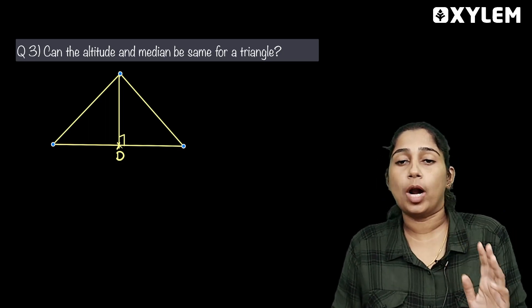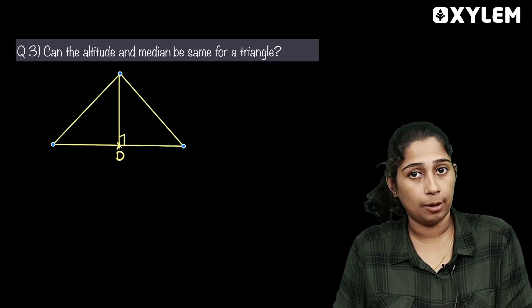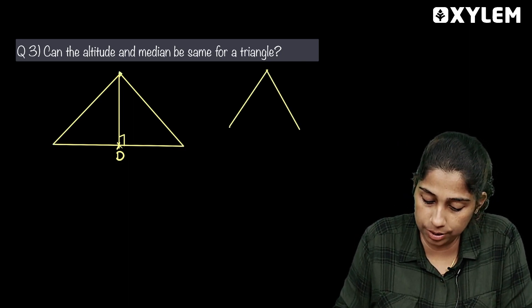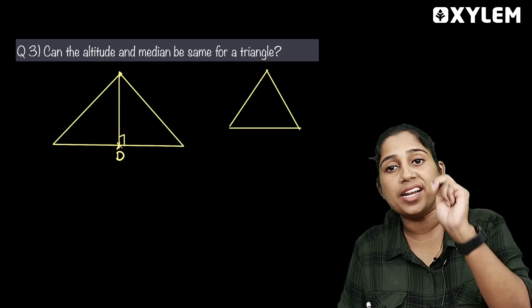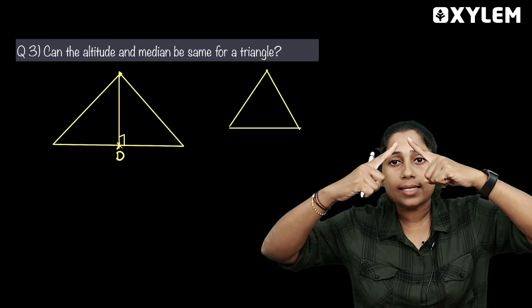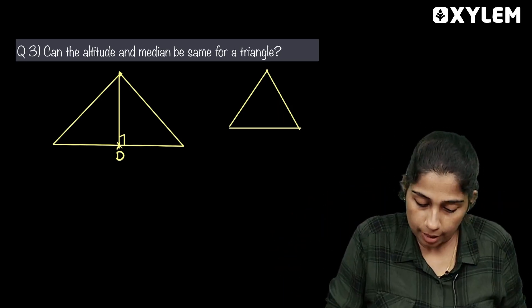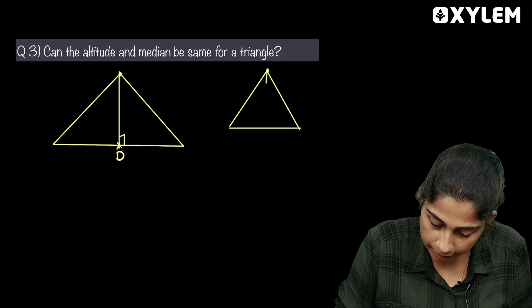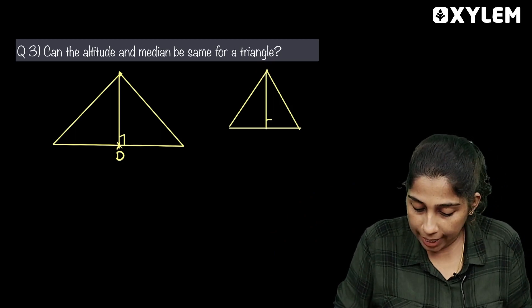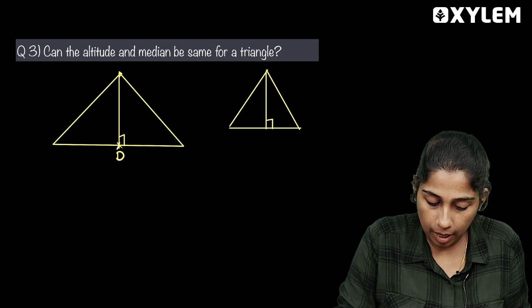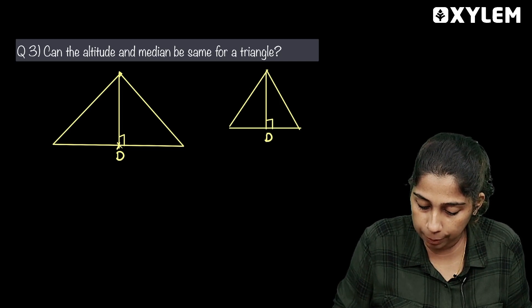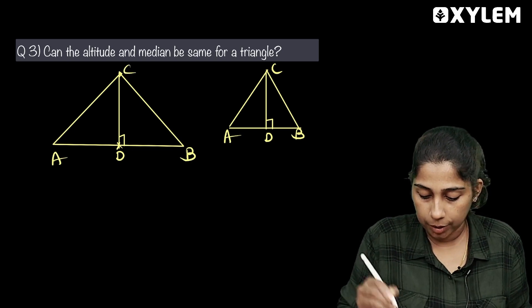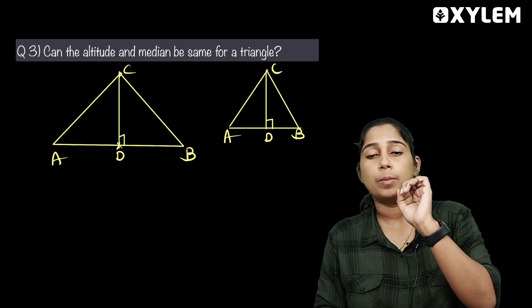For an isosceles triangle — what is the isosceles triangle? It has two equal sides. If we drop the line from the vertex where the two equal sides meet, it is 90 degrees and it is the midpoint. So for an isosceles triangle, the altitude and median from the vertex between the equal sides are the same.